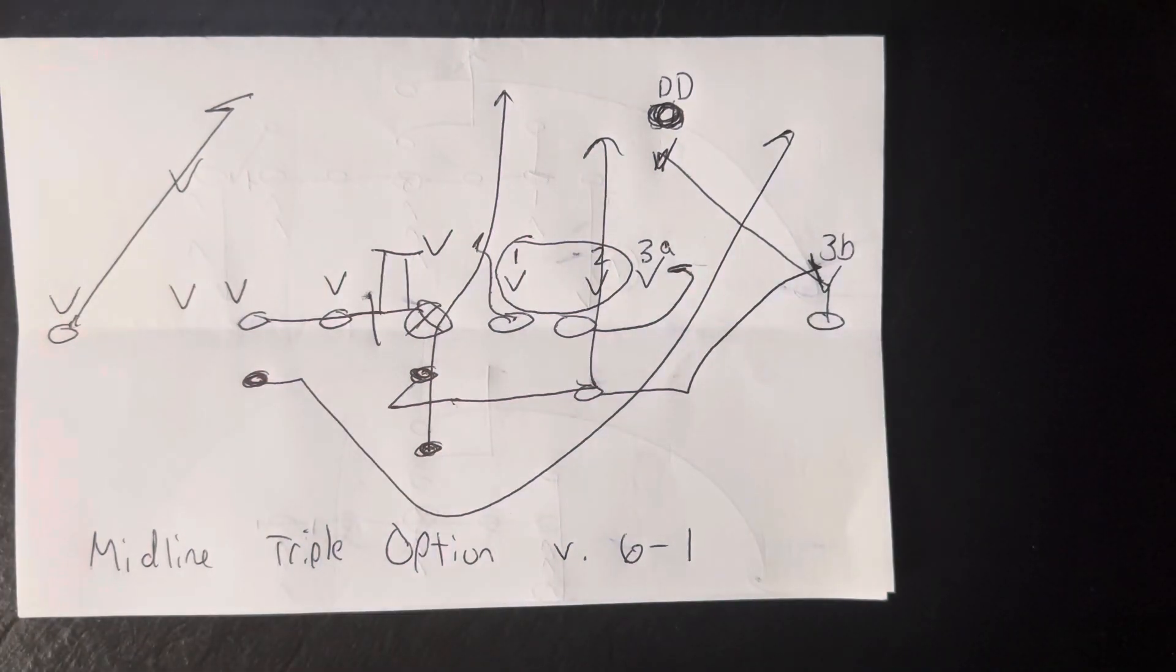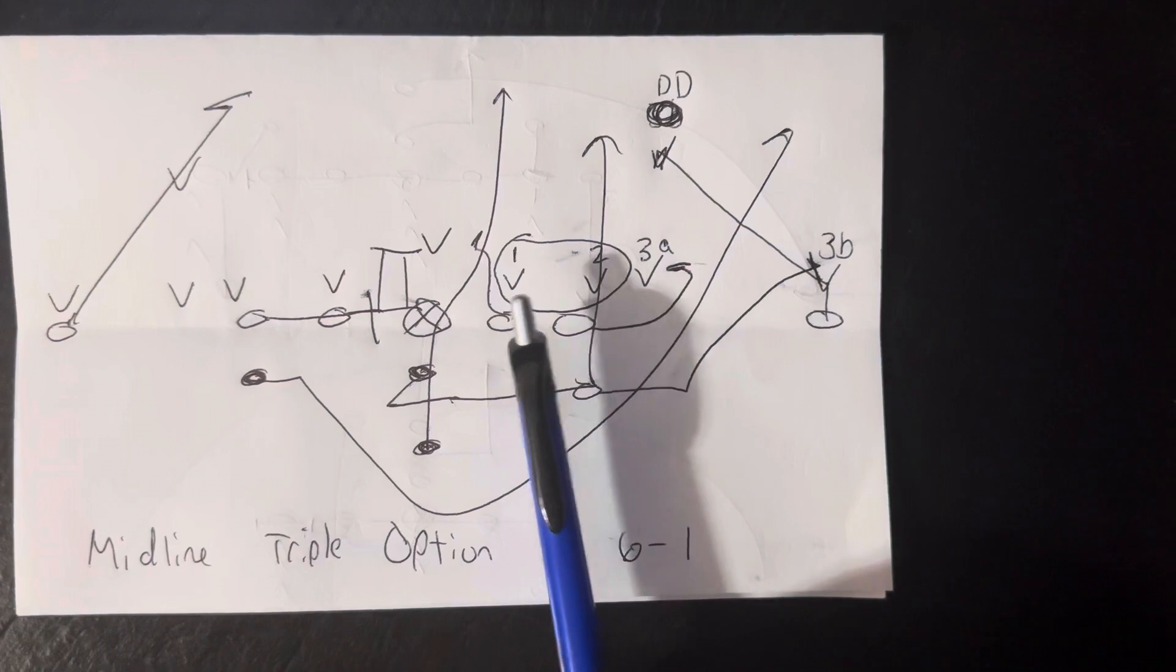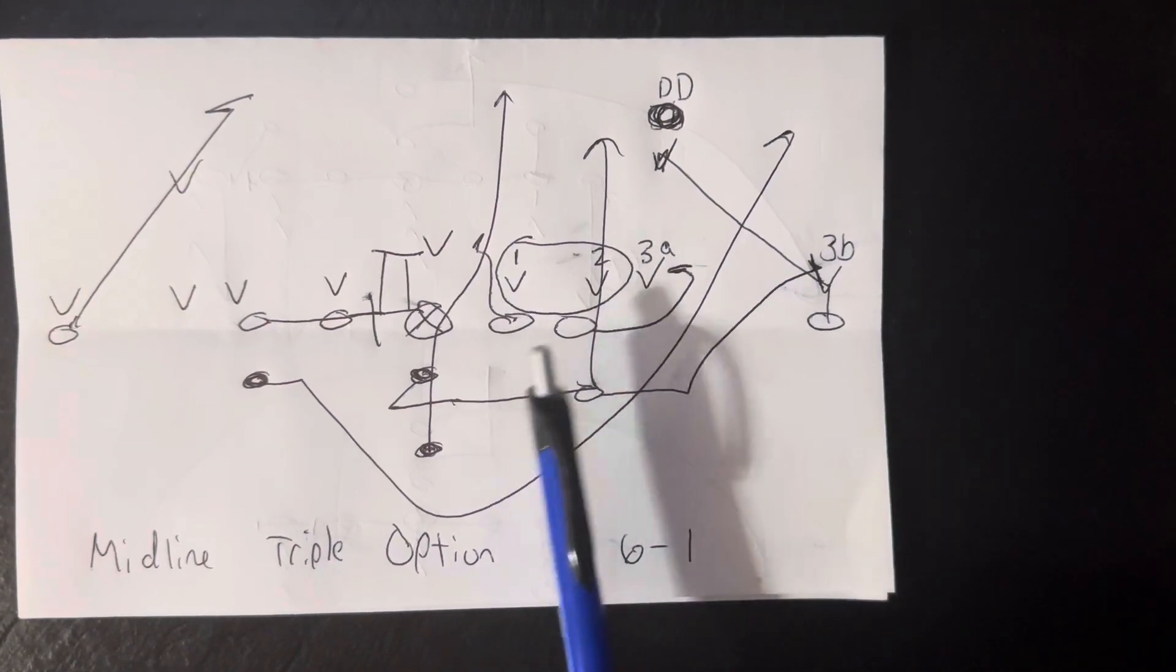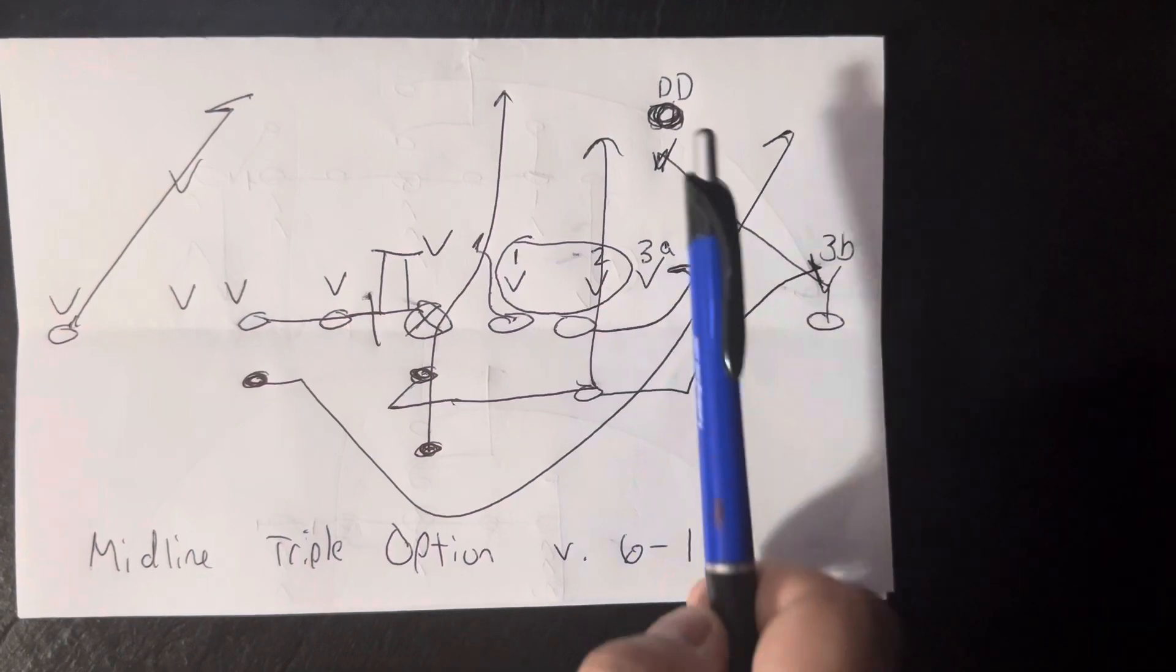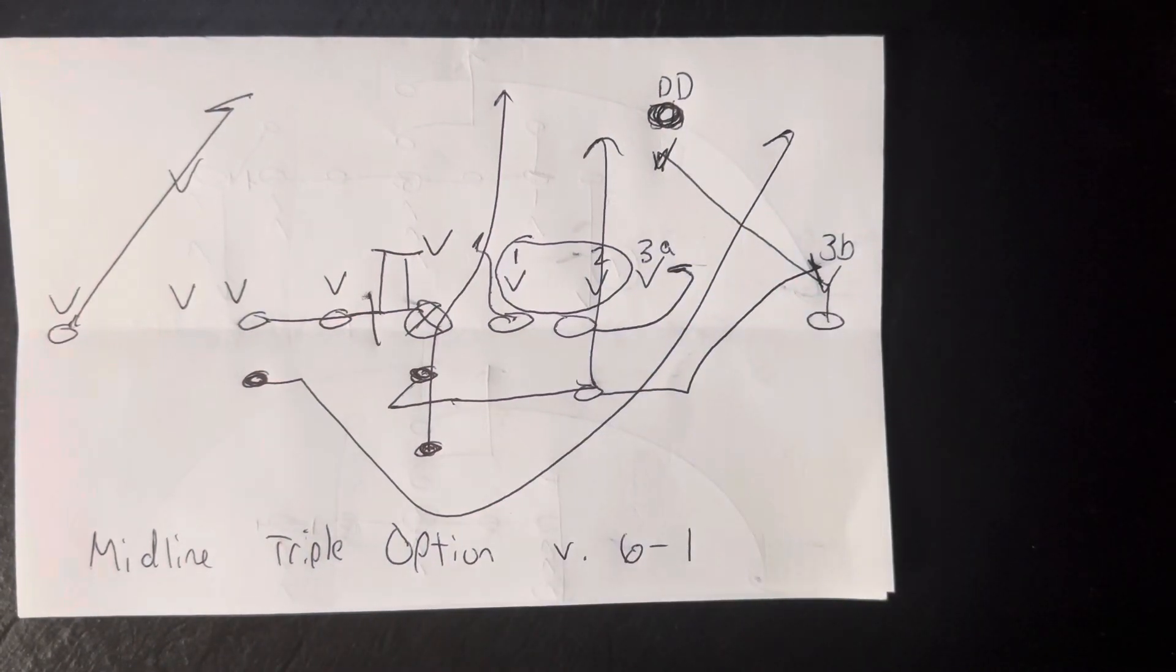Now, midline triple option versus 6-1 means there's going to be double run support. So what happens is, the guy over the guard is number one, the guy over the tackle is number two, and then you've got the corner, the nine-tech, and the safety. So you've got double run support.